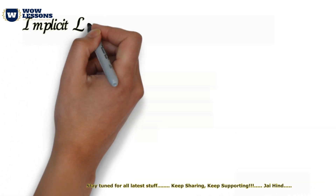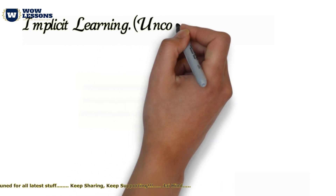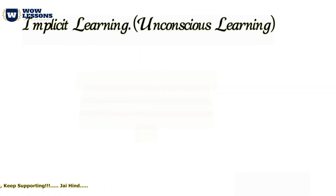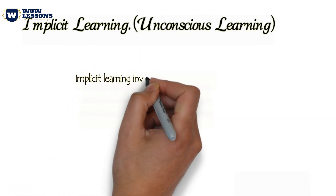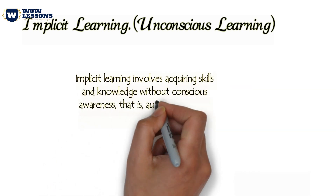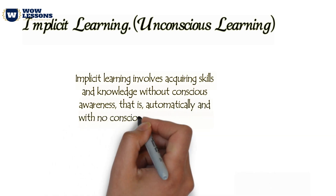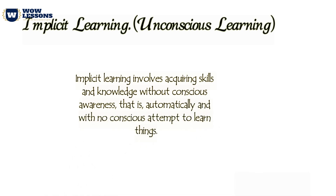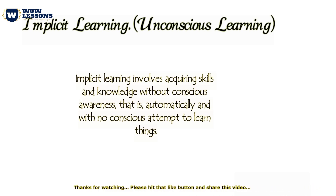Another example of learning is implicit learning, which is also called unconscious learning. Implicit learning involves acquiring skills and knowledge without conscious awareness — that is, automatically and with no conscious attempt to learn things. One simple example of implicit learning is to listen to a conversation in English. When you listen to a conversation, your main goal is not to learn English but to understand the conversation, but by doing the activity you are simultaneously learning the language.